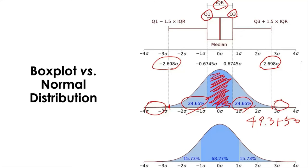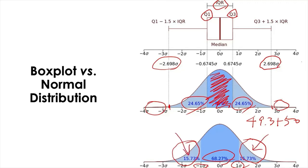And this bottom normal distribution shows the 68-95-99.7% rule, where you can find 68% in the middle within plus or minus one standard deviation. The remaining proportion will then be 32%, so each tail contains about 16%. So this is a side-by-side comparison between the box plot and the normal distribution.